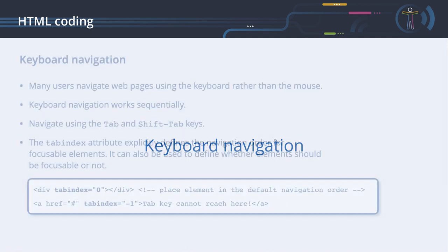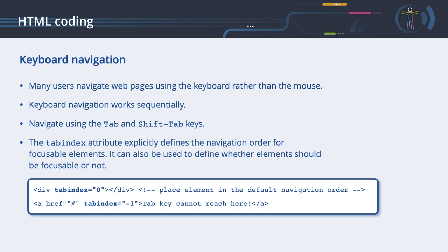Keyboard navigation. Many users navigate web pages using the keyboard rather than the mouse. Expert users prefer keyboard commands for efficiency, while users with certain disabilities have no choice but to use the keyboard. For example, people with physical impairments have difficulties with fine motor movements required to use a mouse. Users with visual disabilities rely on screen readers and cannot see where to click the mouse. In contrast to mouse-based navigation, keyboard navigation works sequentially. Users must tab through all focusable elements — typically links and form controls — one by one before reaching an element of interest. To test a web page for keyboard accessibility, just open a web page and press the tab key. You should reach the first focusable element, and by pressing tab again, the next focusable element. By pressing shift+tab, you should reach the previous focusable element.